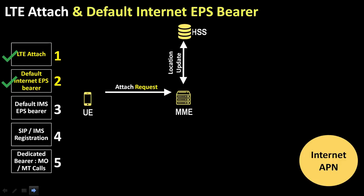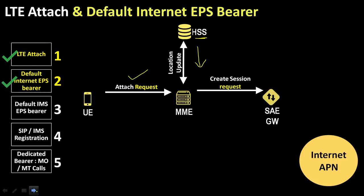Let's start with the LTE attach and default internet EPS bearer call flow. First, the user sends the attach request to the MME in the LTE network. The MME does not have any profile of the user, so it sends an update location request to the HSS. The HSS holds all the database for the user and acknowledges with an update location ACK message to the MME, sending back the complete user profile. This profile also confirms to the MME whether the IMS APN is allowed for that user.